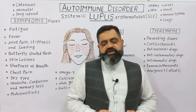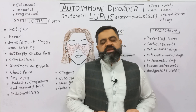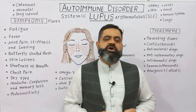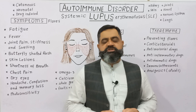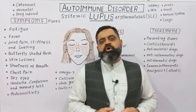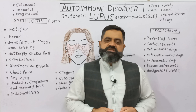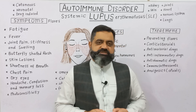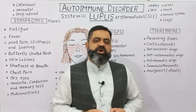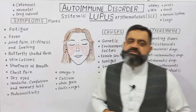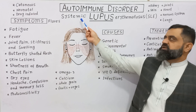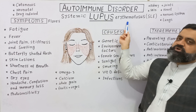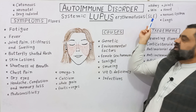In this video lecture we are going to discuss a disease known as an autoimmune disorder or autoimmune disease. This disease is commonly known as lupus, while technically speaking it is known as Systemic Lupus Erythematosus, also known as SLE.